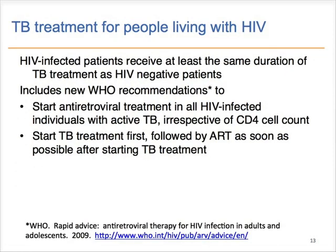The treatment of tuberculosis in patients with HIV infection is beyond the scope of this lecture and is the subject of a separate lecture, but a few important points: patients with HIV infection and tuberculosis should receive treatment that is no shorter than patients who do not have HIV infection. All patients with HIV infection and active tuberculosis should be started on antiretroviral therapy regardless of their CD4 cell count. TB treatment should be started first, and antiretroviral treatment should be started as soon as possible after TB treatment begins.